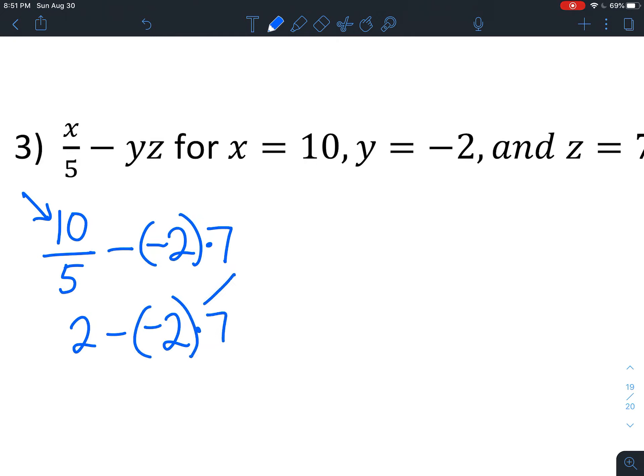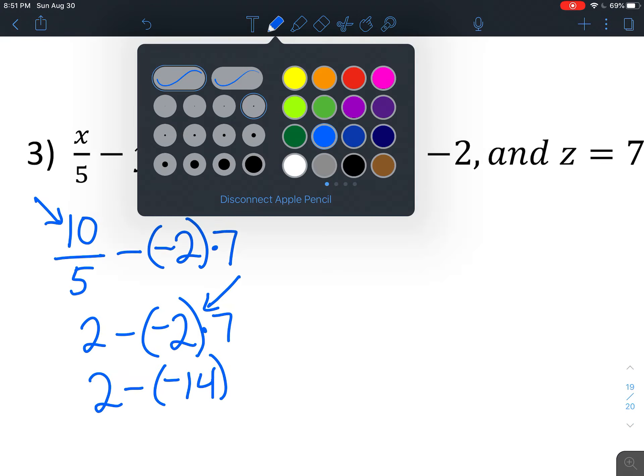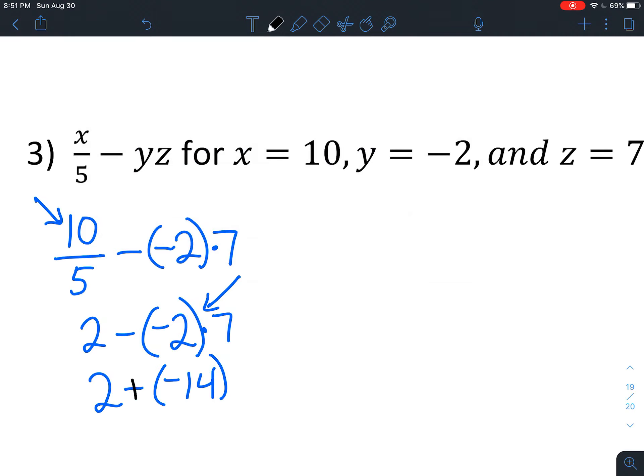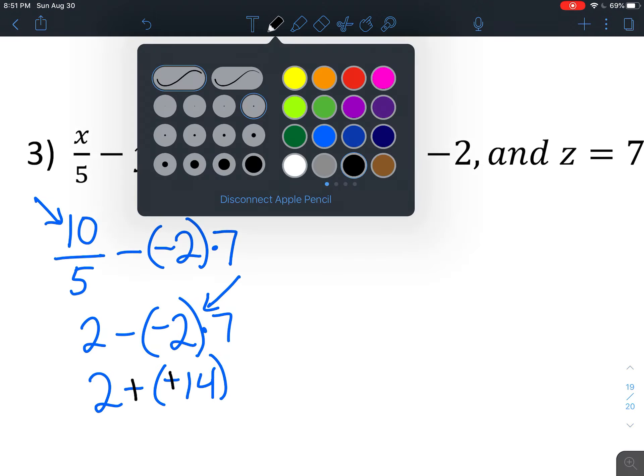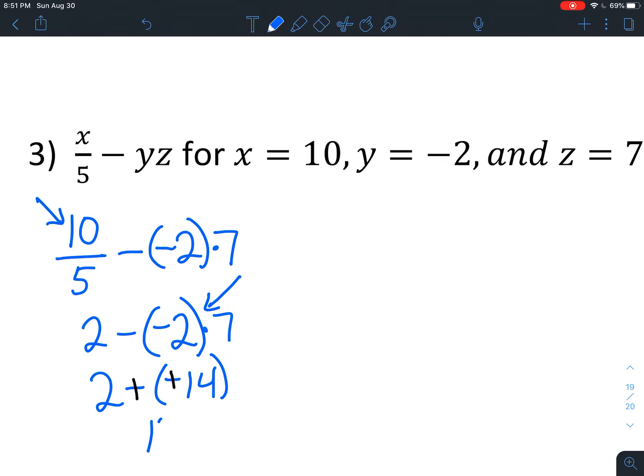And now we're going to do this multiplication next. Negative 2 times 7 is negative 14. I'm still going to keep that in parentheses just to keep it separate. We're going to change this to add the opposite. And 2 plus 14. Now it's just like regular 2 plus 14, which is 16.